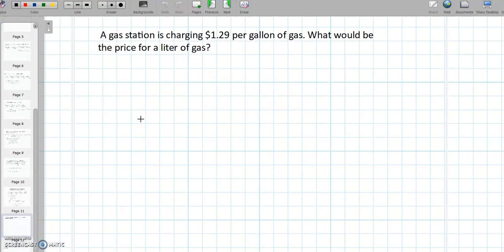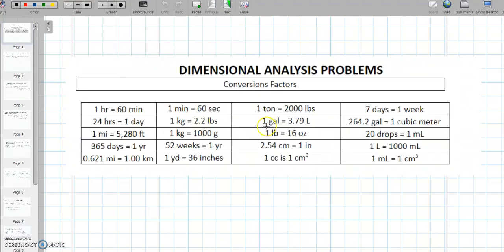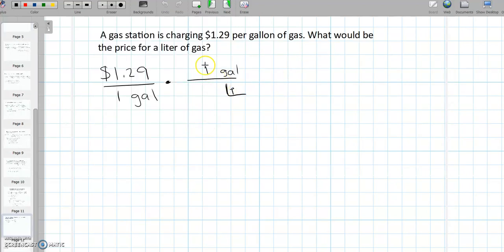All right. A gas station is charging $1.29 per gallon of gas. What would be the price for a liter of gas? Okay, so we have to start out with what we are given. So $1.29 per 1 gallon. And we are asked to convert, what would the price be for 1 liter of gas? So let's look up at our conversions and see if we can get something over gallons and liters. All right, so I see here that 1 gallon is equal to 3.79 liters. So 1 gallon is equal to 3.79 liters. So that cancels out our gallons.